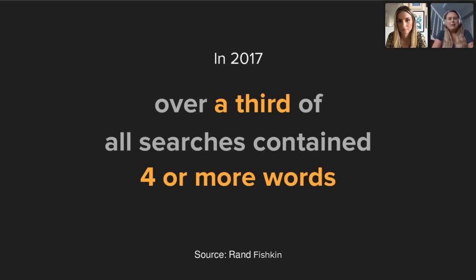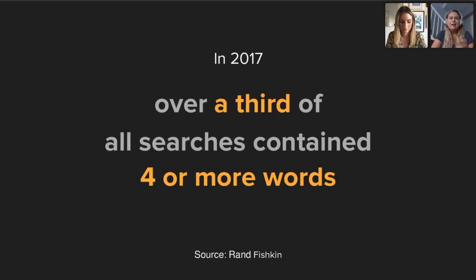Rand Fishkin found that over a third of all searches contain four or more words. Shorter searches tend to be commercial — someone typing 'running shoes' wants to buy something. Longer searches are typically questions or specific statements — looking for information, advice, or community support. So at least a third of the trillions of daily searches are real, emotive human searches we could be tapping into to understand people better.